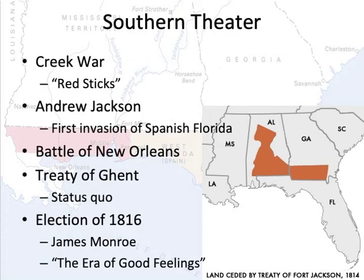After Napoleon's defeat in 1814, British forces were again able to enter the conflict in the southeast and attack Jackson's army at New Orleans. This was a major strategic miscalculation, however, as Jackson's forces were heavily dug in and inflicted a crushing defeat on the British, who suffered almost 2,000 casualties killed, wounded, or missing, while the Americans suffered less than 100 casualties of all types. This victory made Andrew Jackson a national hero and later became the foundation of his eventually successful campaign for the presidency.